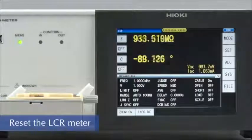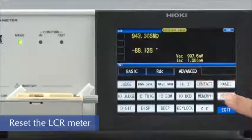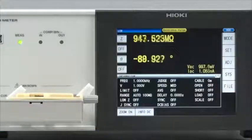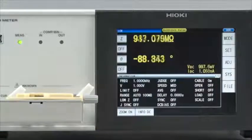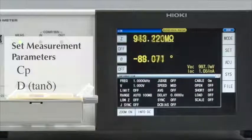First, return the LCR meter to default condition by touching Reset on the screen. All of the settings are now in their default state. Now, let's set the measurement parameters.